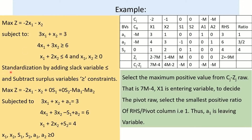The first step of the Big M method is to standardize: add slack variables for less-than-or-equal-to constraints and subtract surplus variables for greater-than-or-equal-to constraints. We add slack and surplus variables with zero coefficient to the objective function, and subtract the Big M penalty with artificial variables a1 and a2 using coefficient M. Since this is maximization, we subtract. This is the standardized form, which we now put into the initial simplex tableau.